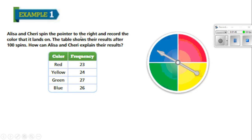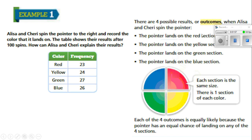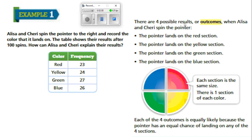Alyssa and Sherry spin a pointer and record the color it lands on. The table shows the results after 100 spins. How can Alyssa and Sherry explain the results? There are four possible outcomes: the pointer can land on the red, yellow, green, or blue section. Each section is the same size and there is one section of each color, so each of the four outcomes is equally likely — the pointer has an equal chance of landing on any of the four sections.